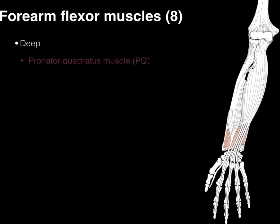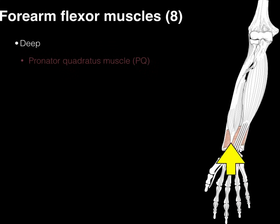Finally, the pronator quadratus is a four-sided, quadratus-shaped muscle that pronates the forearm. It runs from the ulna to the radius, and when it contracts, it pronates the forearm.